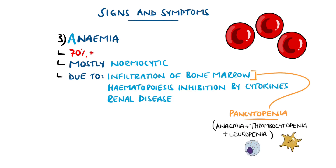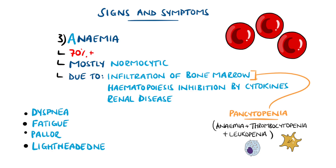Like the other CRAB criteria, anemia can itself cause symptoms, like shortness of breath, also known as dyspnea, fatigue, pallor, and lightheadedness.